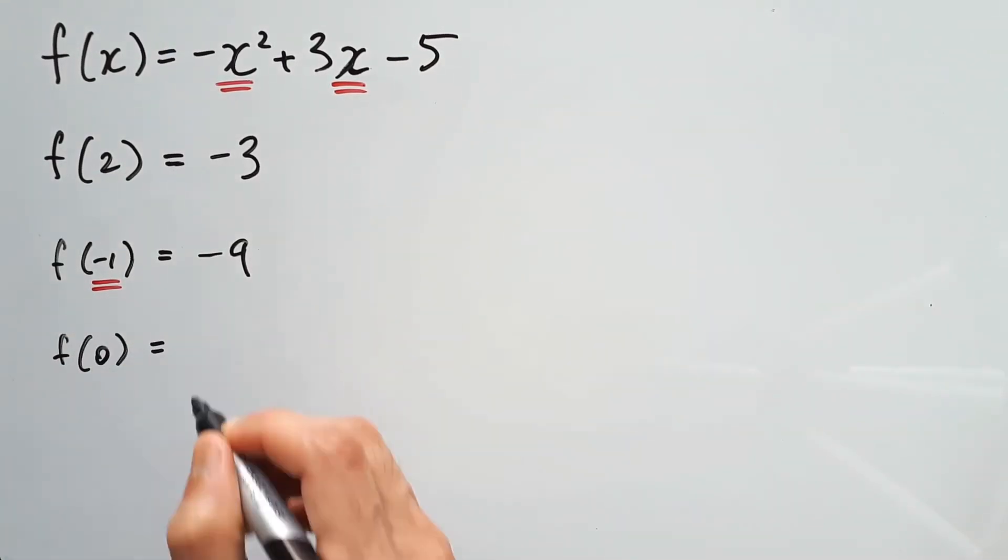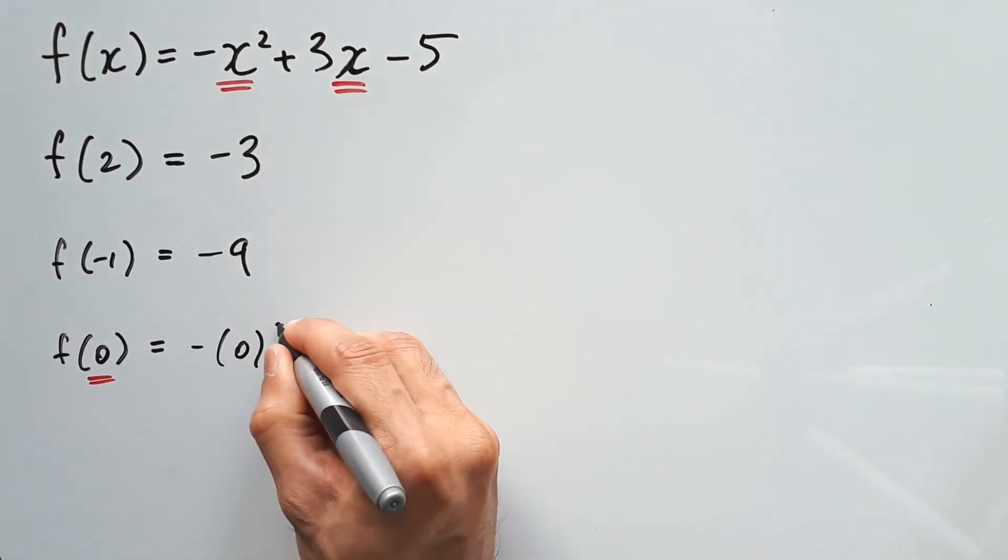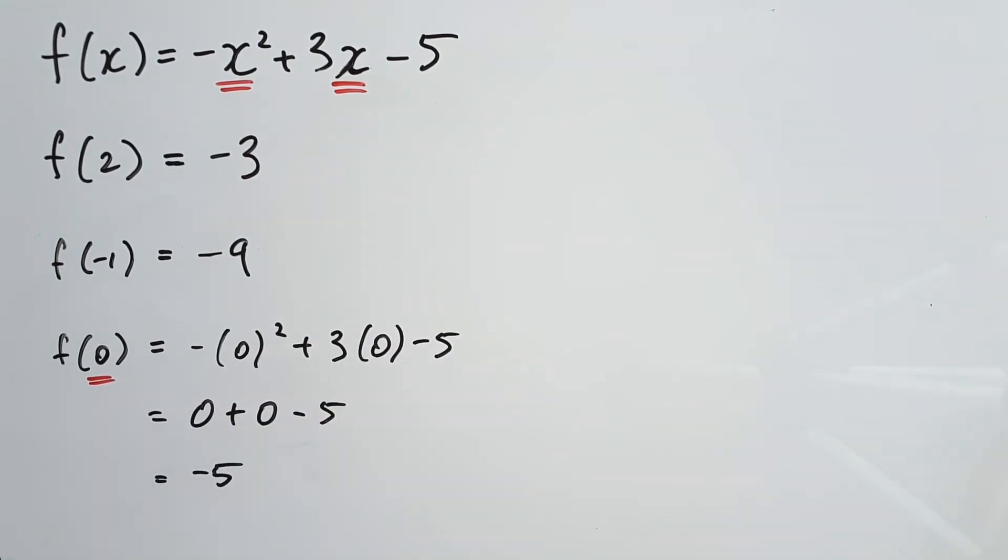As for f of 0, we simply need to replace both the x's for 0 now, giving us a value of negative 5. And this coordinate would be written as 0 comma negative 5, right? Which means that if you were to plot this out on the Cartesian plane, this will be a y-intercept.